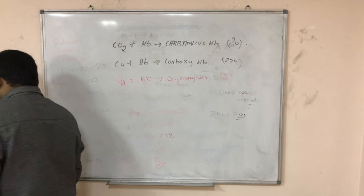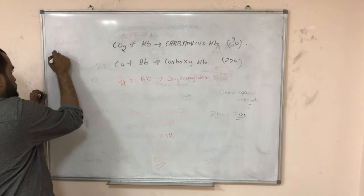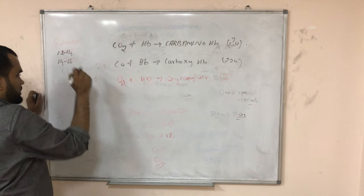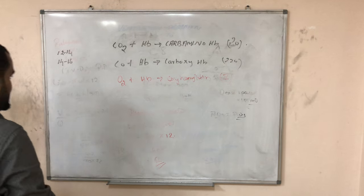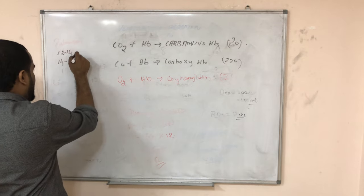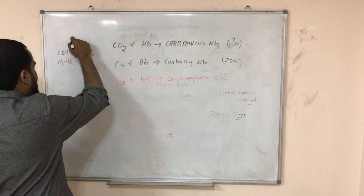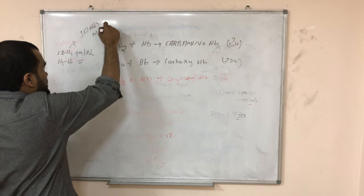Now there is a method to find out the level of hemoglobin in our body. Normal is 12 to 14 for female, around 14 to 16 grams for male. Males have more. That is units gram per deciliter. There is a method called Saheli's method to measure hemoglobin.